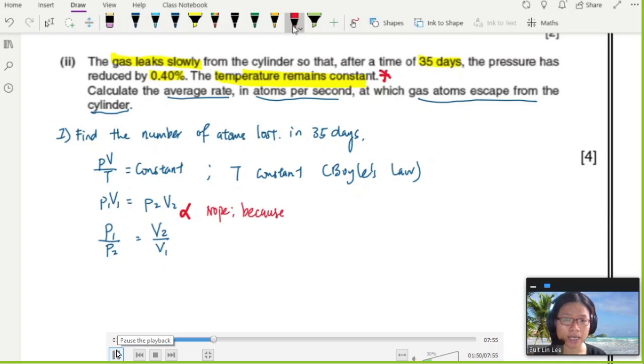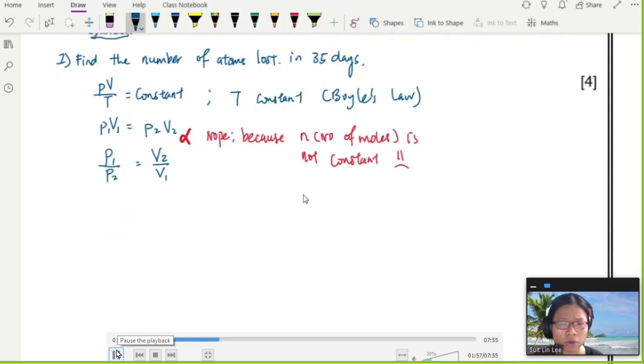There is the number of moles, and it's not constant. How do I know? I got molecules leaking out. So draw a line, restart again.